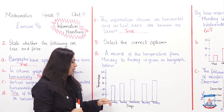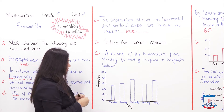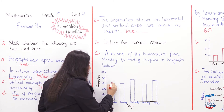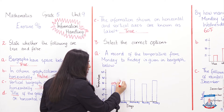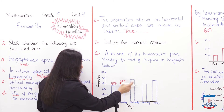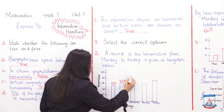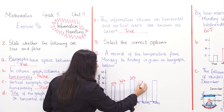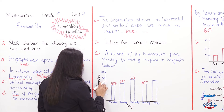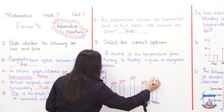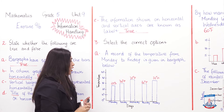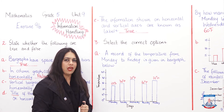First, let's read the temperature values. On Monday the temperature is between 20 and 30, so it is 25°F. Tuesday is 30°F. Wednesday is between 30 and 40, so it is 35°F. Thursday is again 30°F, and Friday is between 30 and 40, so it is 35°F.